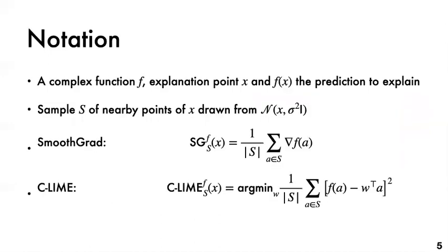Before stating our main results, let me introduce some notation. We use f to denote the complex function and x, the point in which we want to explain the prediction of f. That is, we want to explain the prediction f of x. To generate nearby points around x for both SmoothGrad and CLIME, we sample points from a Gaussian distribution which is centered at x and have a diagonal covariance matrix with equal entries on the diagonal. We denote this sample by s. As you can see on this slide, the explanation of SmoothGrad can be written as the average of the gradient of f at points in s. Also, since CLIME fits a linear model, the output of CLIME can be written as the solution of the ordinary least square over all the data points in s, as you can see in the last bullet.